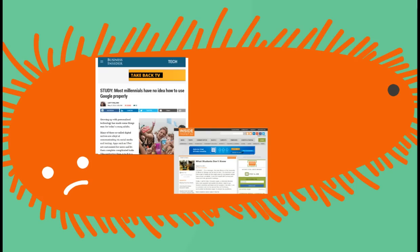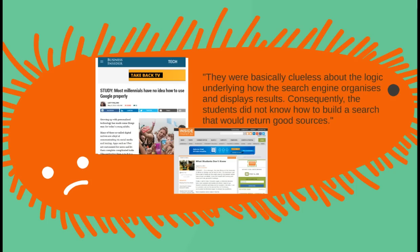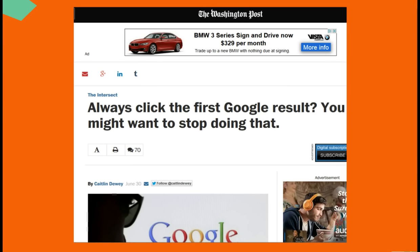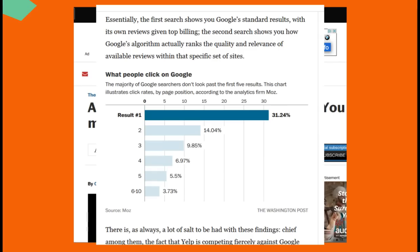Here's an article from Inside Higher Ed, and this study looked at three universities in Illinois to basically find that students really couldn't return good sources — they couldn't build a search that would do that. And research from the Washington Post found that the majority of people actually look at just the first thing they find on Google, which is a big problem.